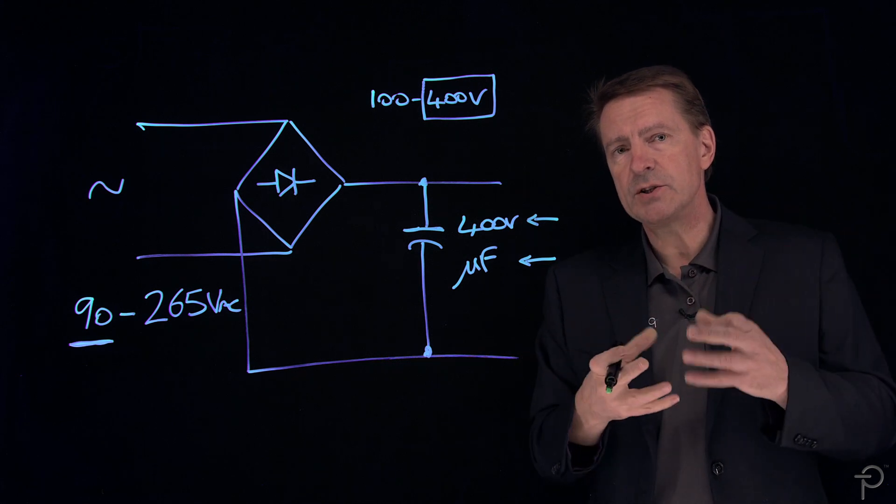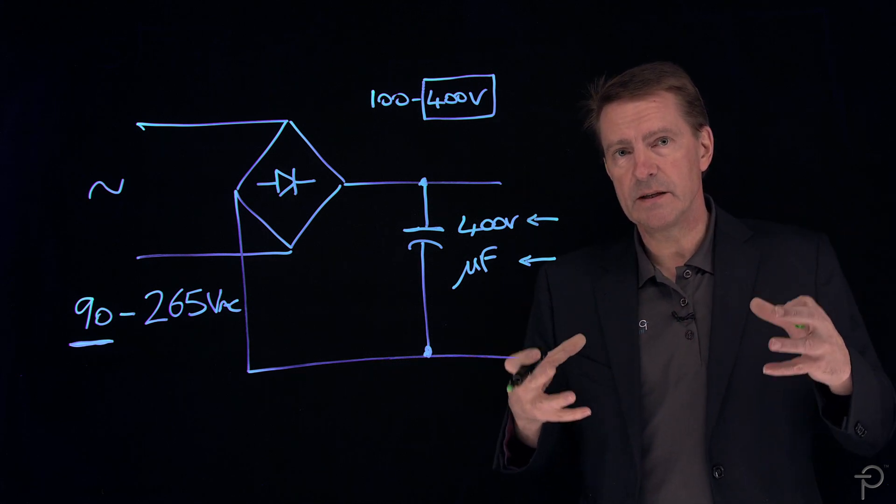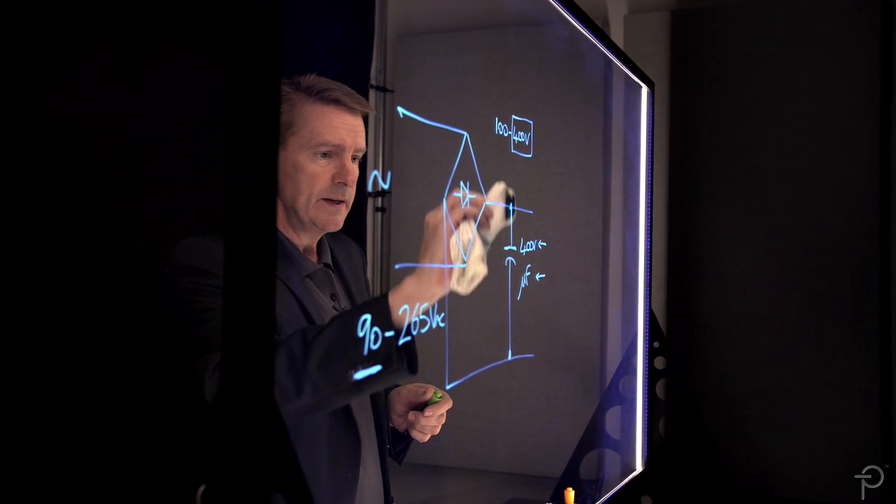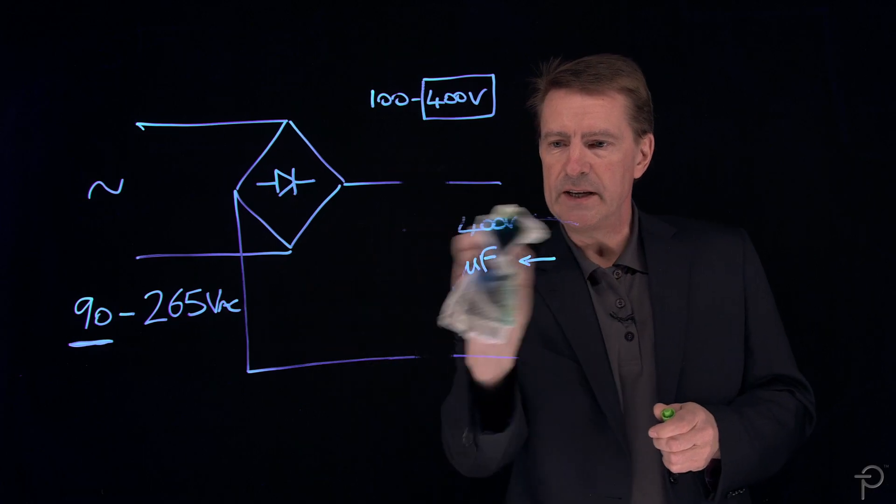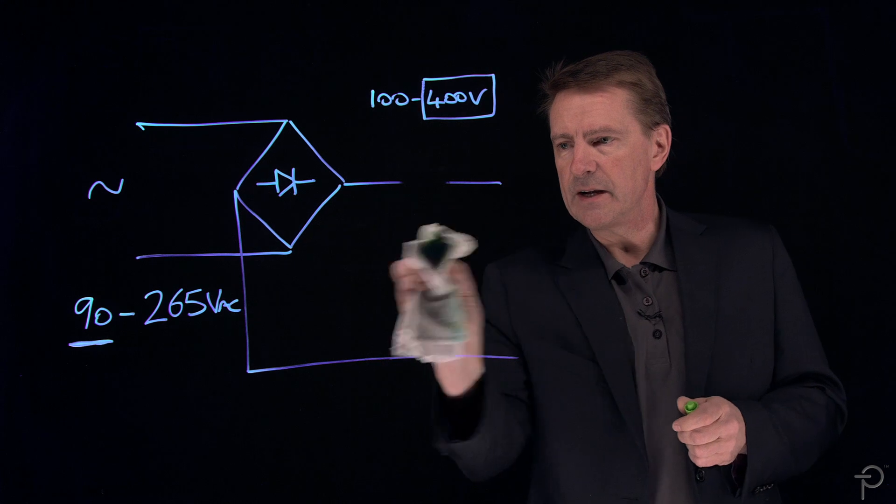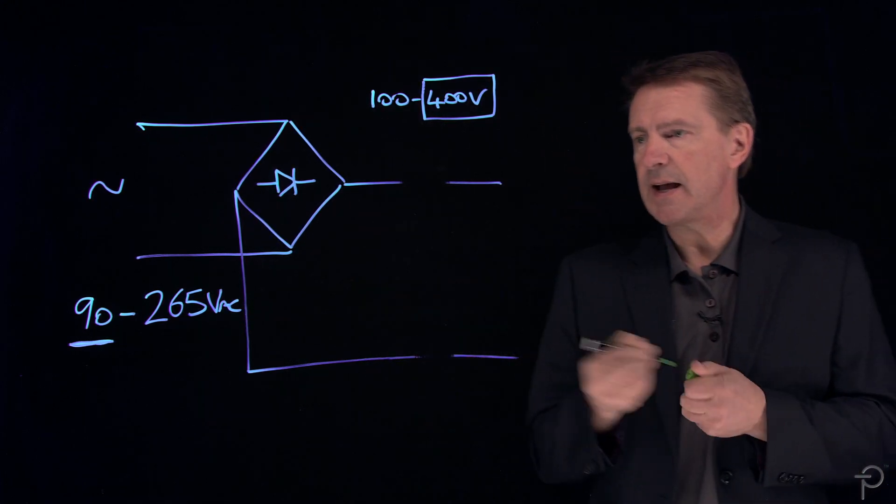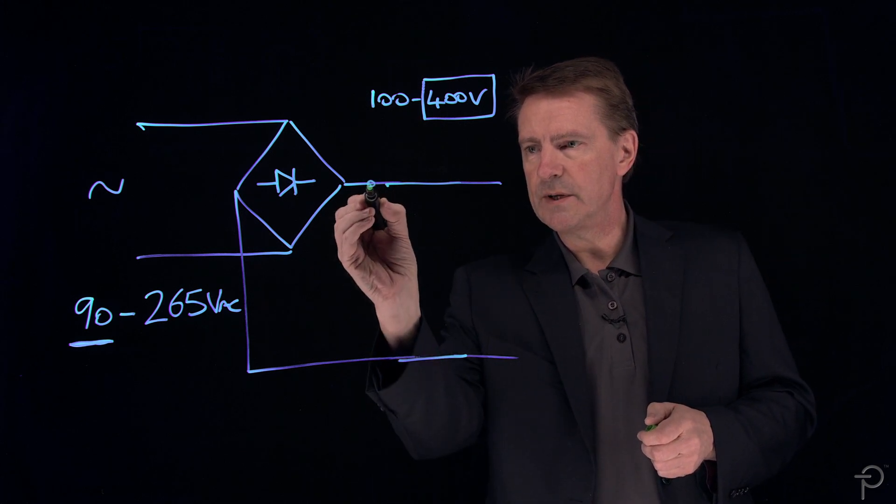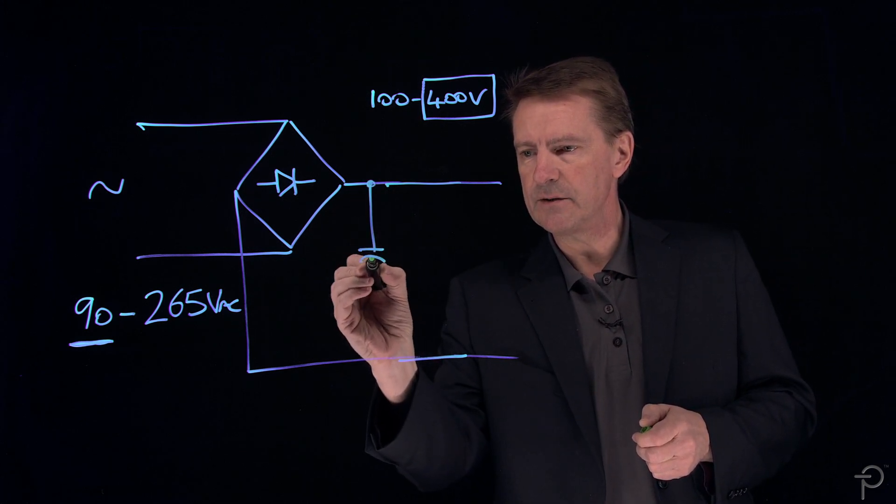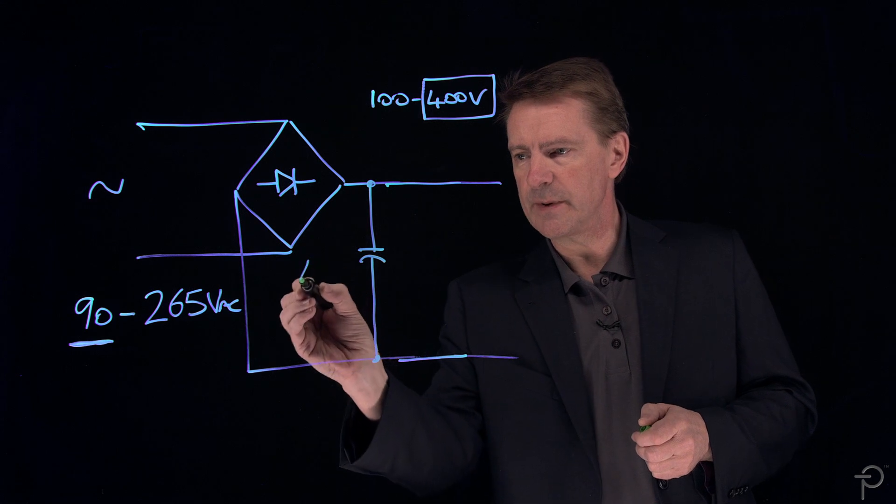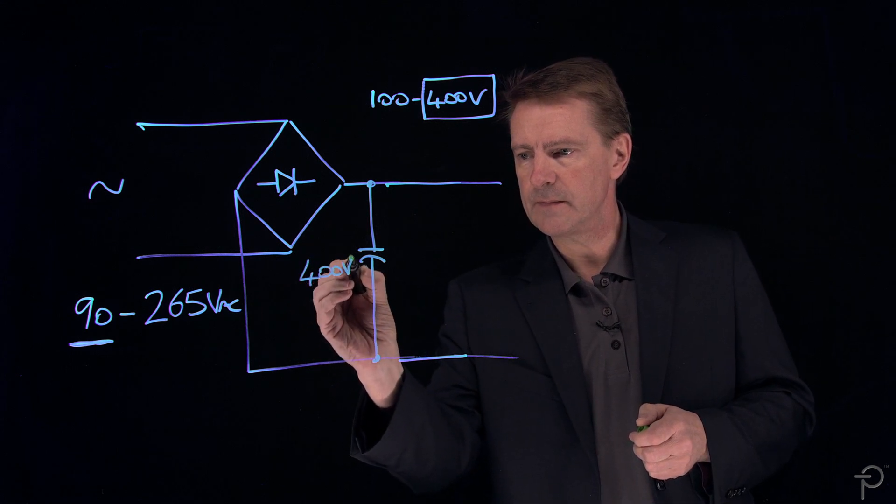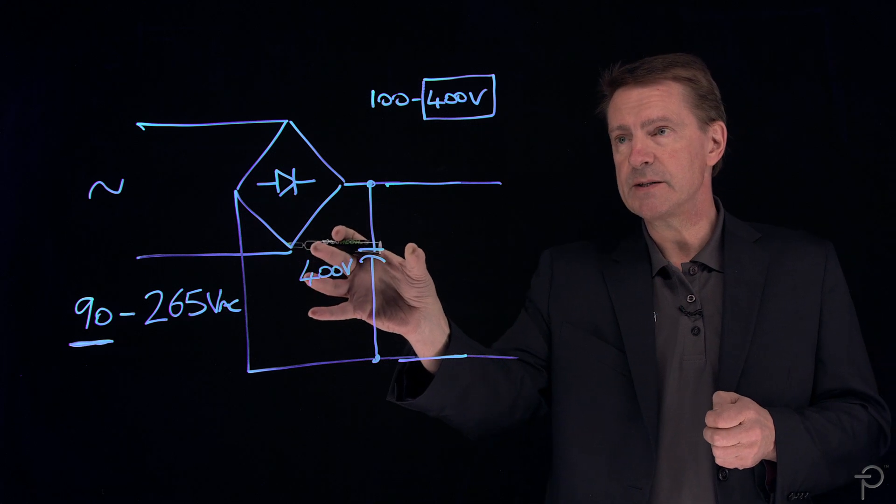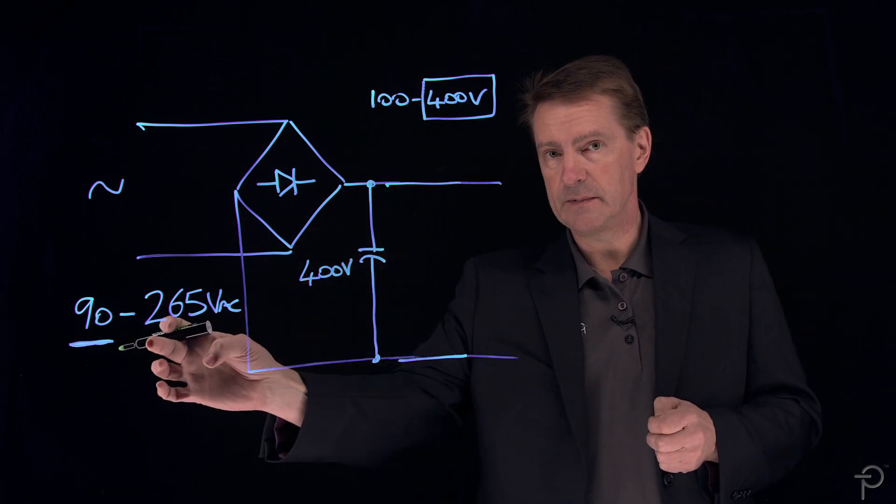And it's that combination which makes this capacitor so big. Now, what the Minicap does is it removes the need for a very large high voltage capacitance. And instead, it replaces this input capacitance with a much smaller value, 400 volt capacitor. And that capacitor is designed so that the power supply operates correctly at the high line input condition.